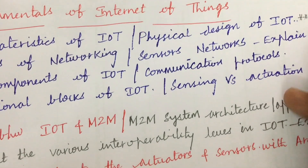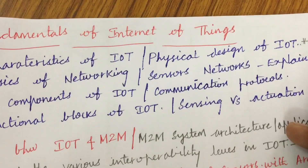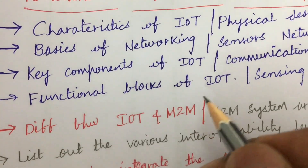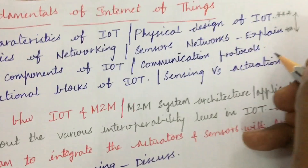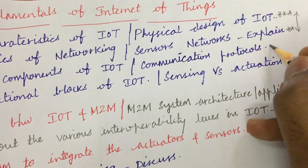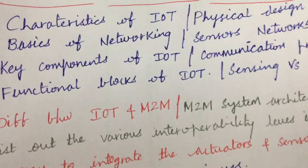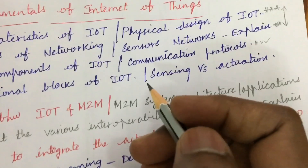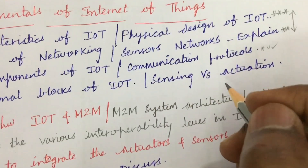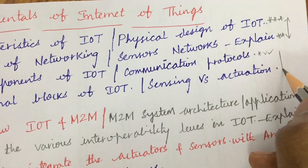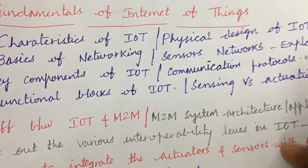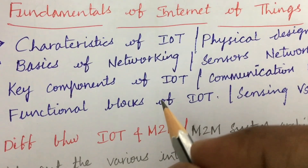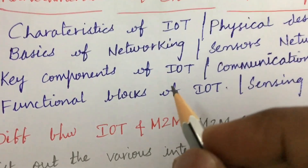From these two parts you may be getting questions 1a as well as 1b. Later, what are the various key components of IoT and differences between communication protocols are also repeated questions. The functional blocks of IoT and differences between sensing versus actuation are also important. From this part you will get one more question, as per the exam pattern, you will get two questions from the first unit.